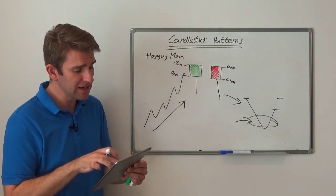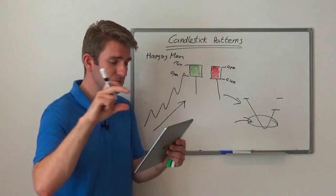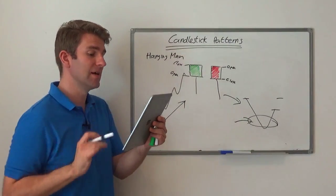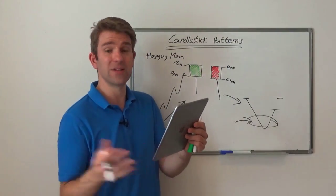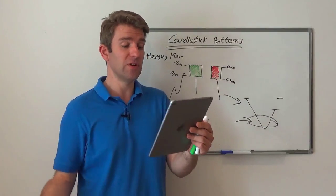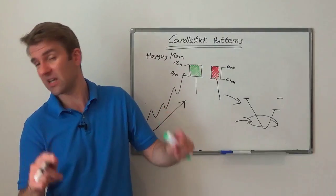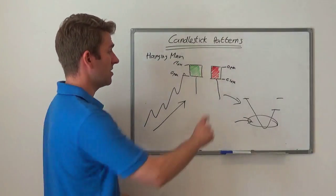Here on Investopedia it's saying the candle should have a small body near the top of the candle, a large tail or lower shadow at least twice the size of the body. As we've said, the candle can be green or red, with a red candle close considered more bearish.